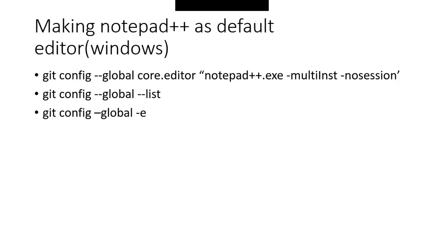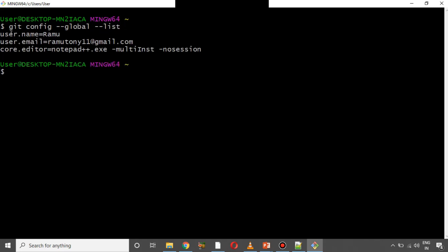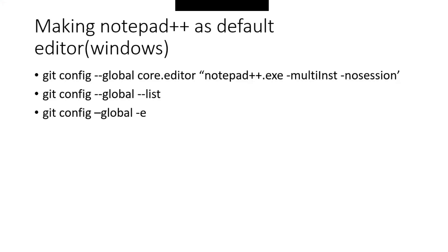Now everyone will set the configuration variables as default. Run: git config global --list. You can see the config variables listed. Now check that notepad++ is set as the default editor in the list.